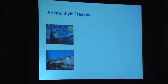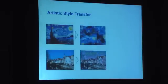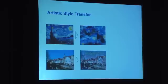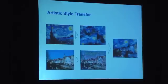To perform artistic style transfer, we extract the texture information from a painting and the information represented in a higher layer of the convolutional neural network of the photograph, which basically preserves the content of the image. We then combine both of these representations into a new image that combines the style of the painting with the content of the photograph.